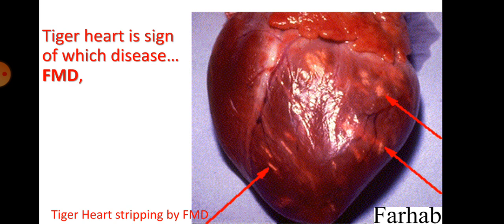Tiger heart is a sign of FMD (foot-and-mouth disease), and these signs are mostly seen in calves. Tiger heart is not observed in adult animals. These are whitish lines or strippings on the heart, and these white strippings are known as tiger heart.